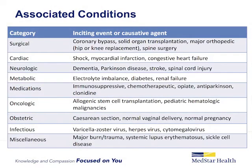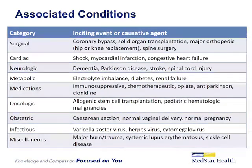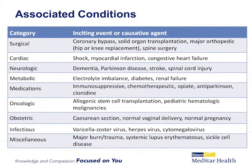We have listed the associated conditions here in table format. Associated conditions are surgical, including coronary bypass, solid organ transplantation, major orthopedic, or spine surgery. Cardiac causes include shock, myocardial infarction, and congestive heart failure. Neurologic associated conditions are dementia, Parkinson's disease, stroke, and spinal cord injury. Metabolic abnormalities could include electrolyte imbalances, diabetes, and renal failure. Some of the medications commonly associated are immunosuppressive medications, chemotherapeutic agents, opiates, anti-Parkinson medications, and clonidine.